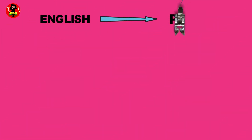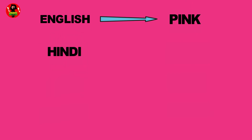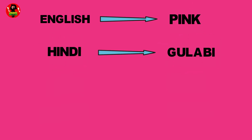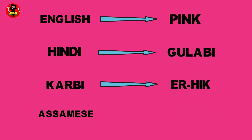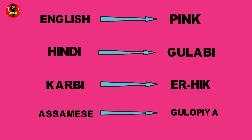English: Pink. Hindi: Gulabi. Karbi: Erhik. Assamese: Gulupiah.